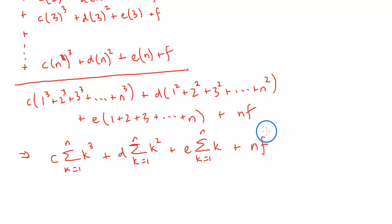Over here I just wrote n times f. Hopefully it's pretty clear that the sum from k equals 1 to n of 1 is equal to n because it's just 1 plus 1 plus 1 n times.